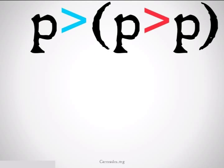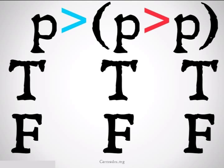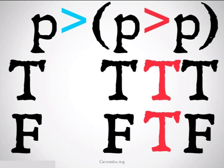The first of our propositions was P implies P implies P. The first thing we're going to do is list the truth tables under each of our variables. This is pretty simple because we only have one variable here, so there's only two possible worlds — P is either true or P is false. Then we're going to start as far into the parentheses as we can, beginning with that red implication in the center. We remember that the only time implication is false is when the first is true and the second is false, which is never going to be the case here. So we have two trues — it's true in all possible worlds.